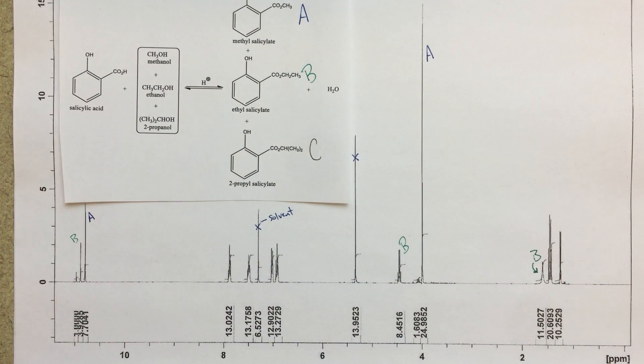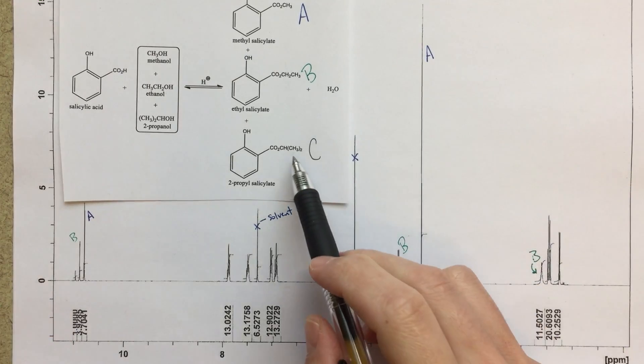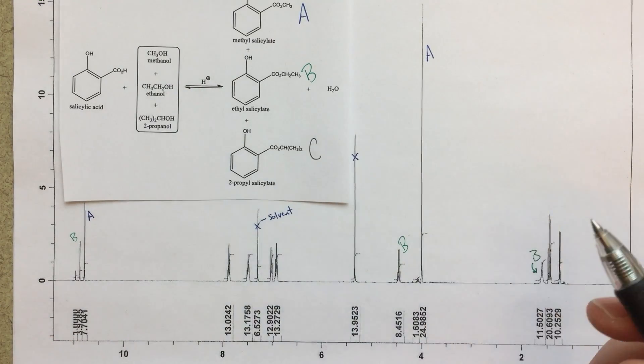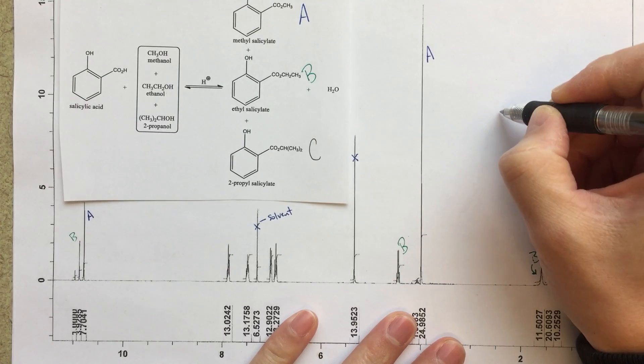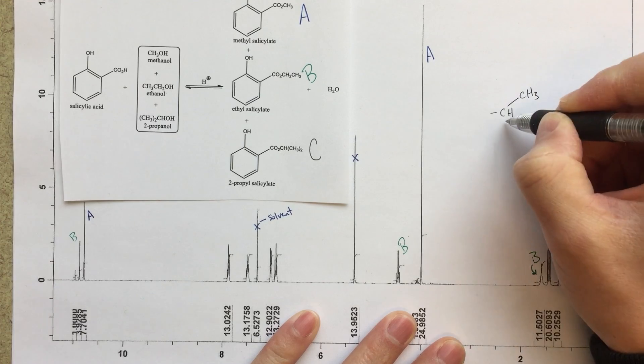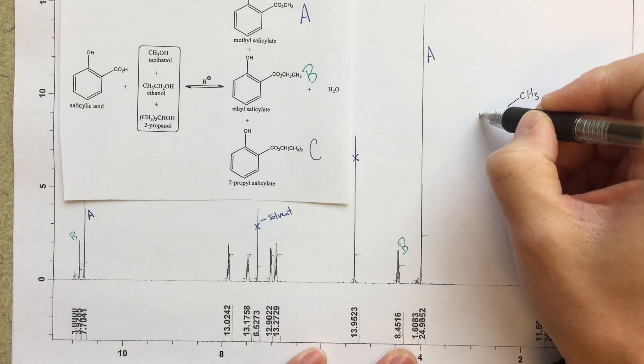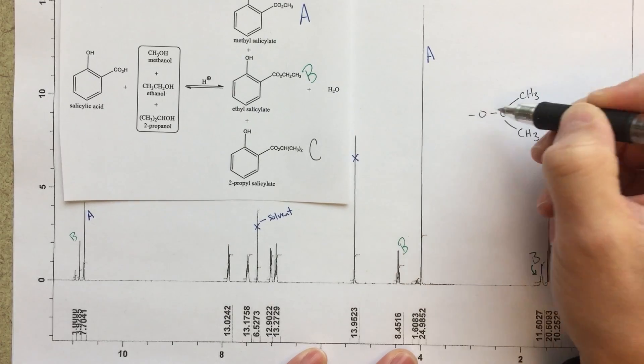So let's move on to C. So for C, I'm going to use this black pen, and for C, we've got an isopropyl group. So an isopropyl group, maybe we'll just draw a little picture here. So C is going to be like that. So then this is going to be our O, and then the rest of the molecule.